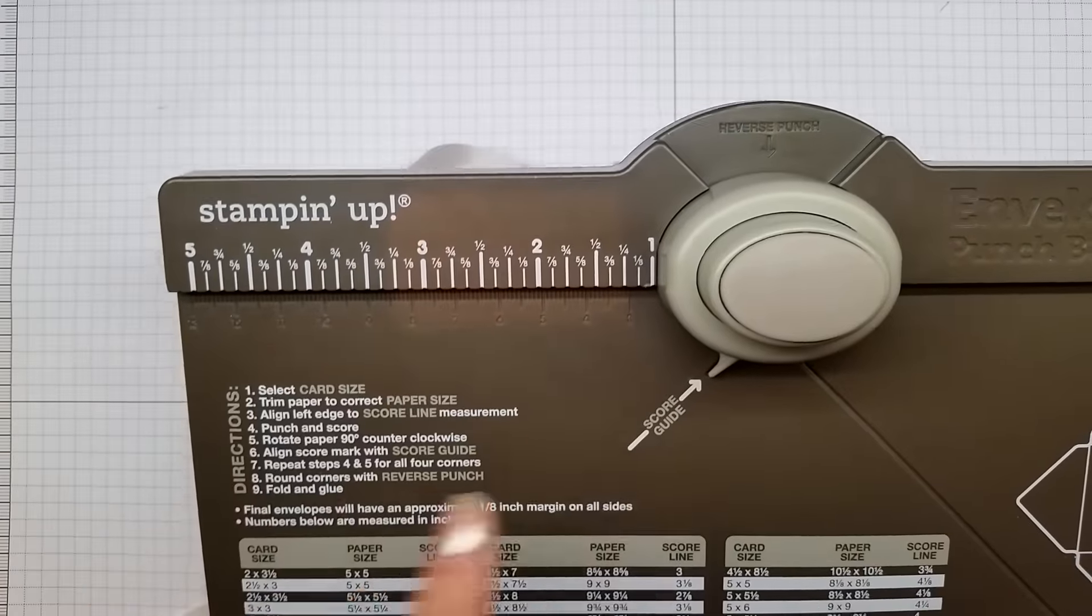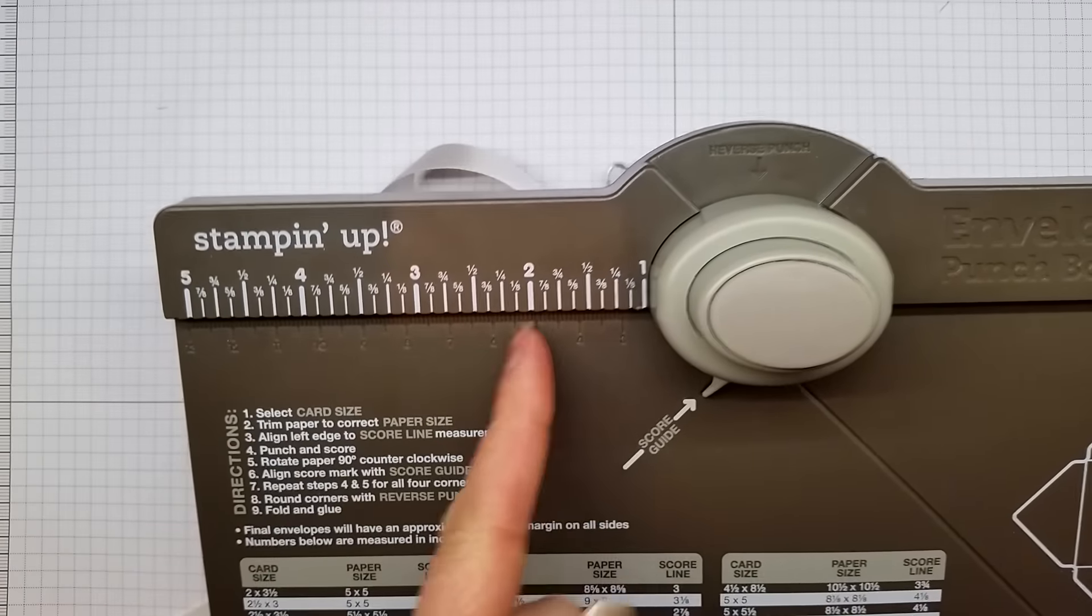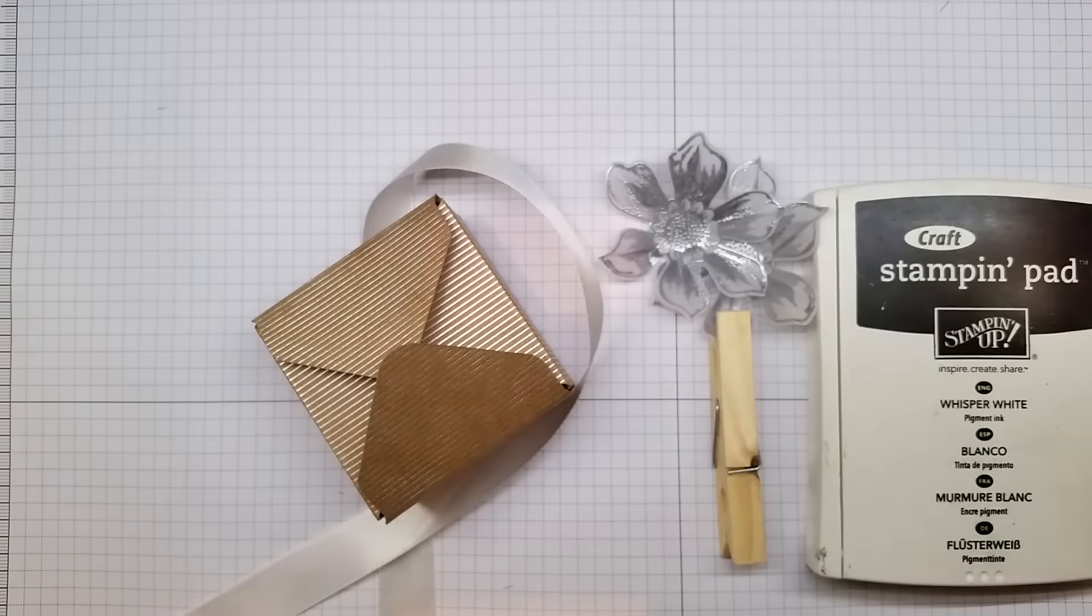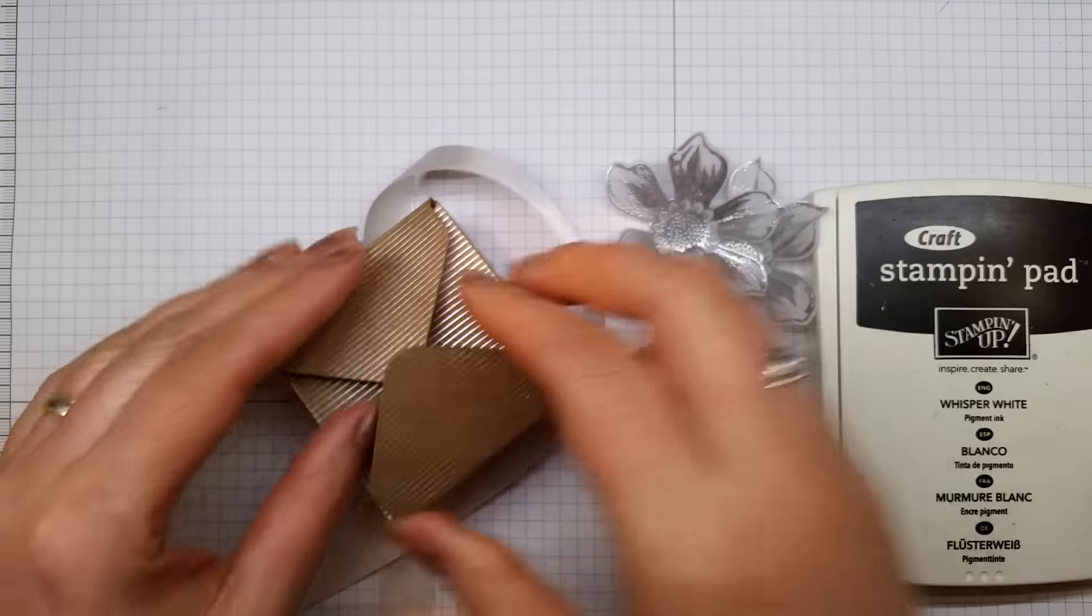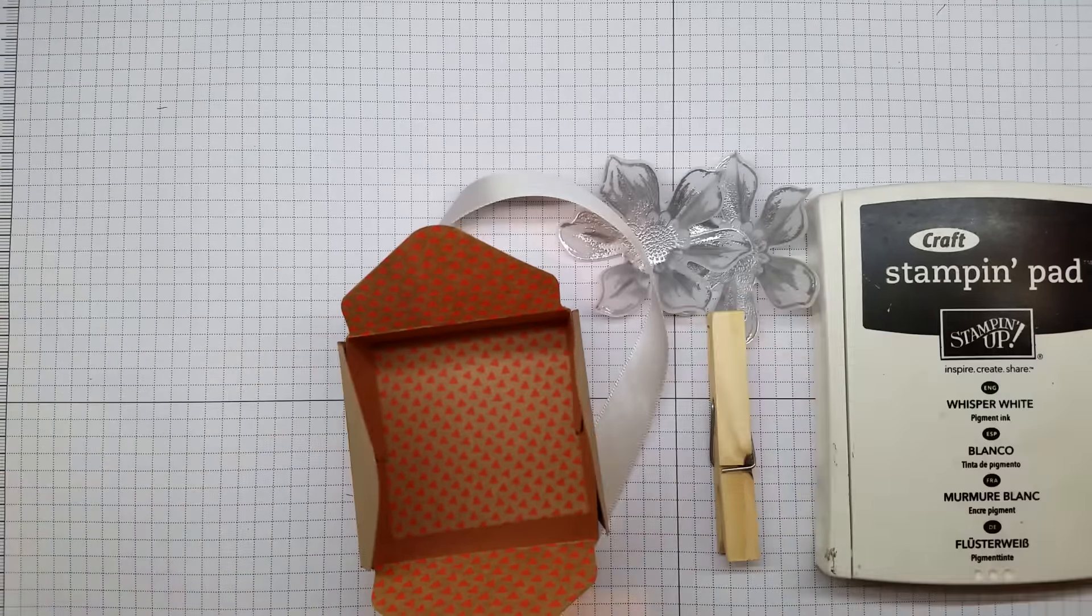I punched and scored at 2 inches and 4 inches on every side of the cardstock and then folded it to create this box. Before I folded it, I just cut two slits on either side of the scored square in the center.